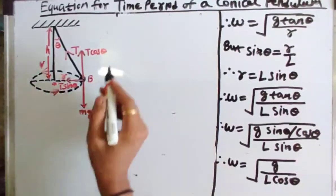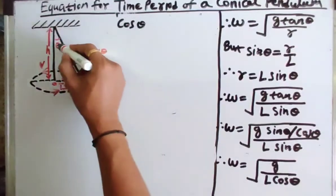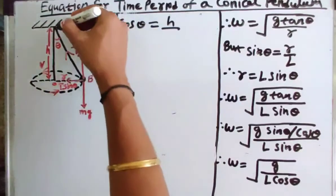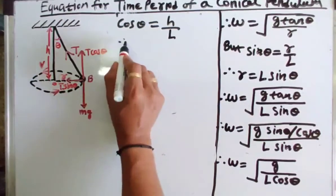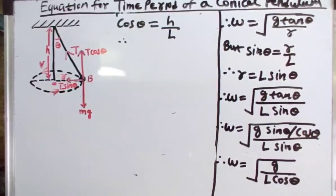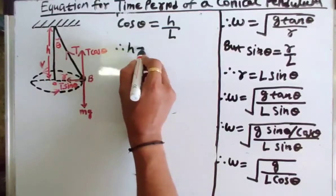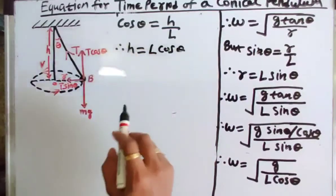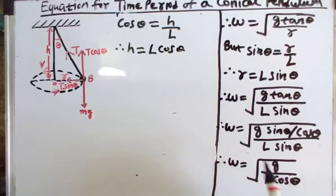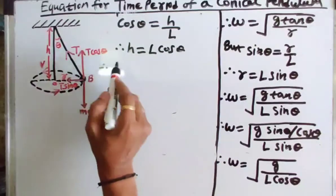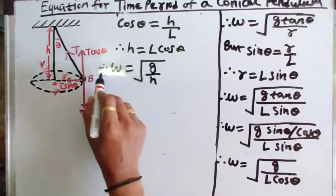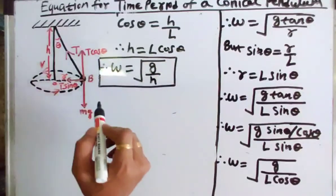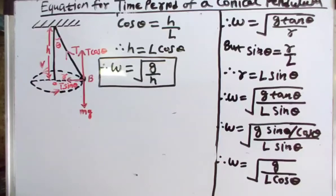From the figure, cosθ equals the adjacent side h divided by the hypotenuse L, so cosθ = h/L, meaning h = L cosθ. Substituting h for L cosθ in the equation, we get ω = √(g/h). This equation gives us the angular speed of the bob in conical pendulum motion.